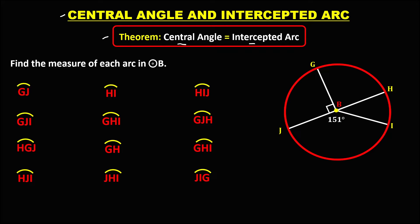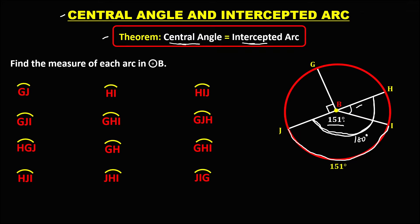From the given information, this angle is 151 degrees. By the theorem that the central angle equals the intercepted arc, this arc is also 151 degrees. Then to find the adjacent angle, since this is a straight angle of 180 degrees, we compute 180 minus 151 degrees.